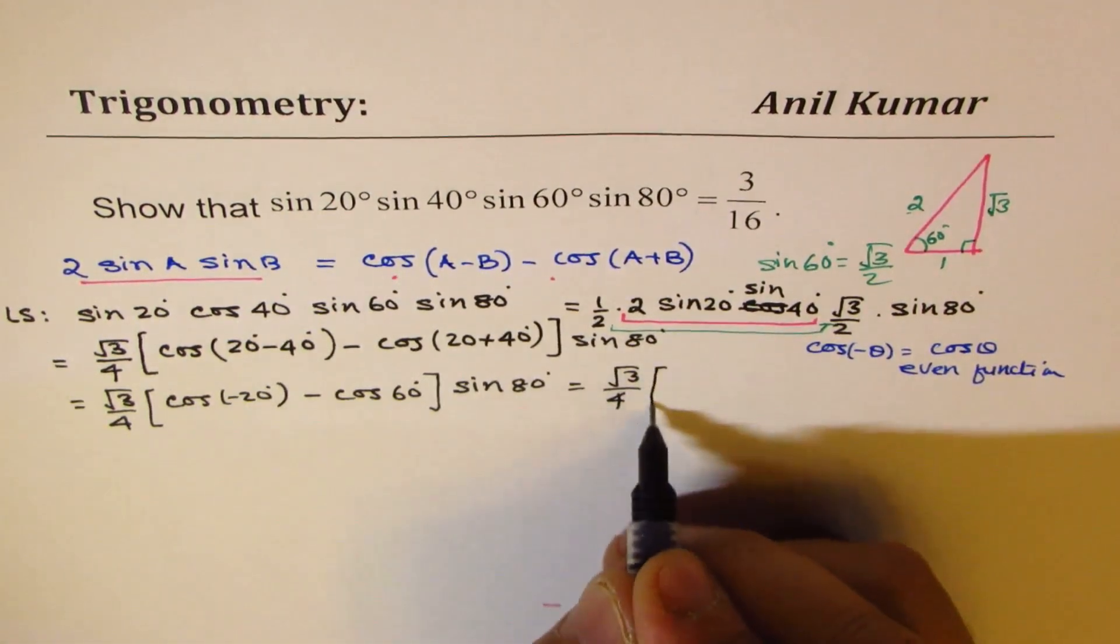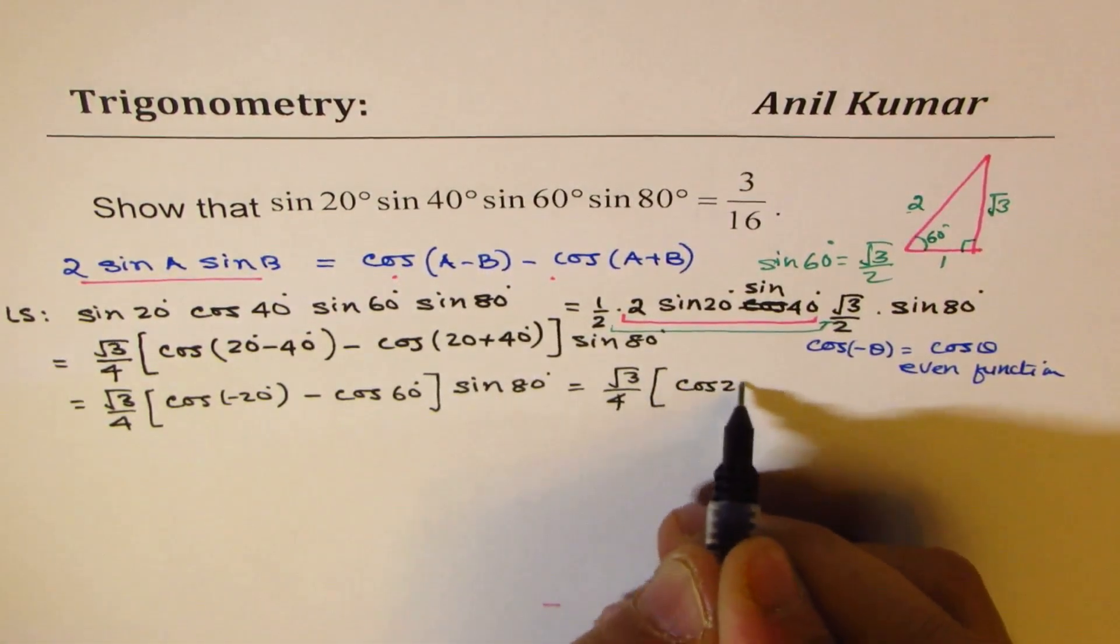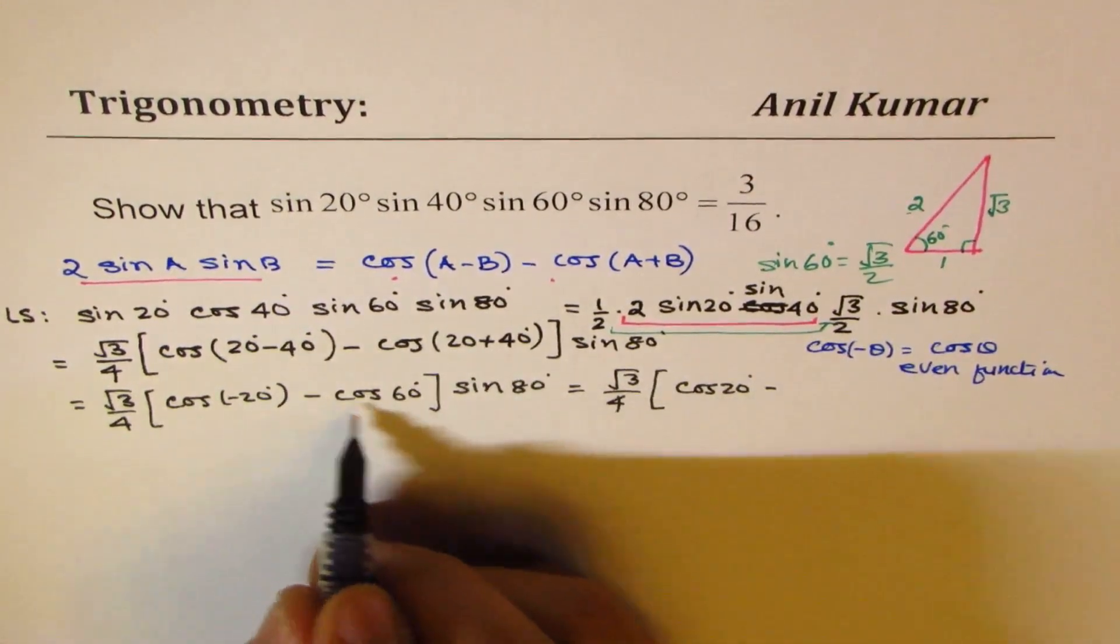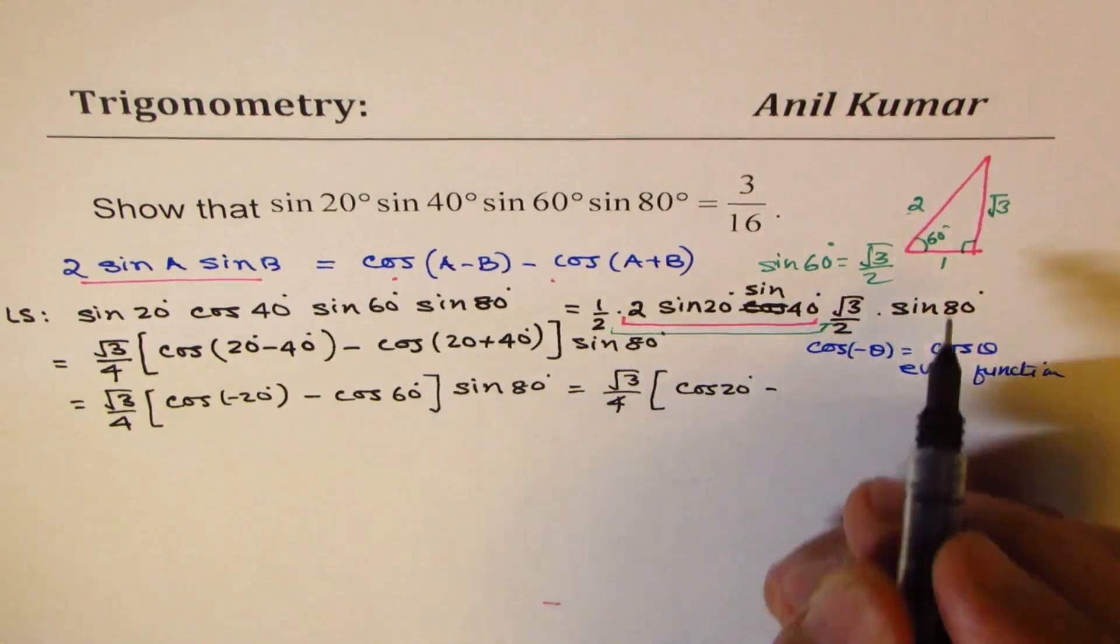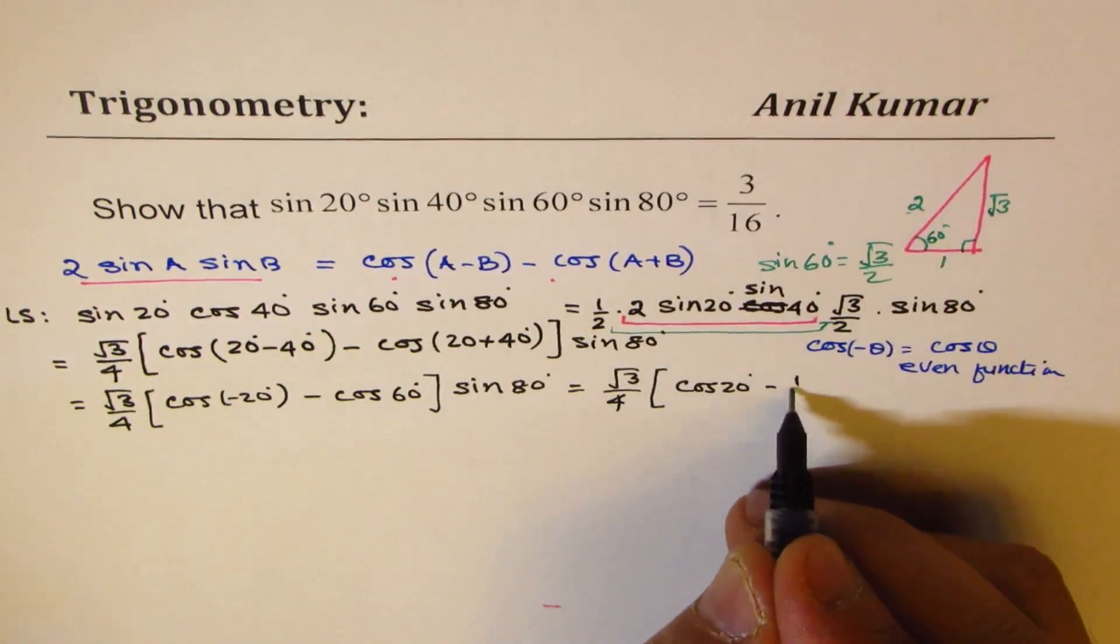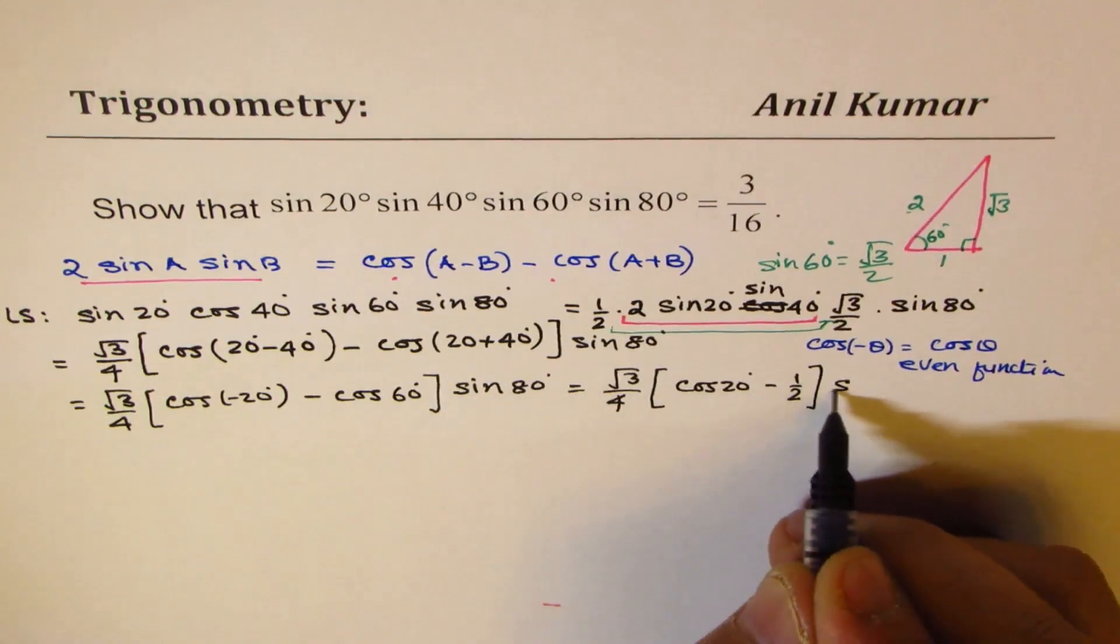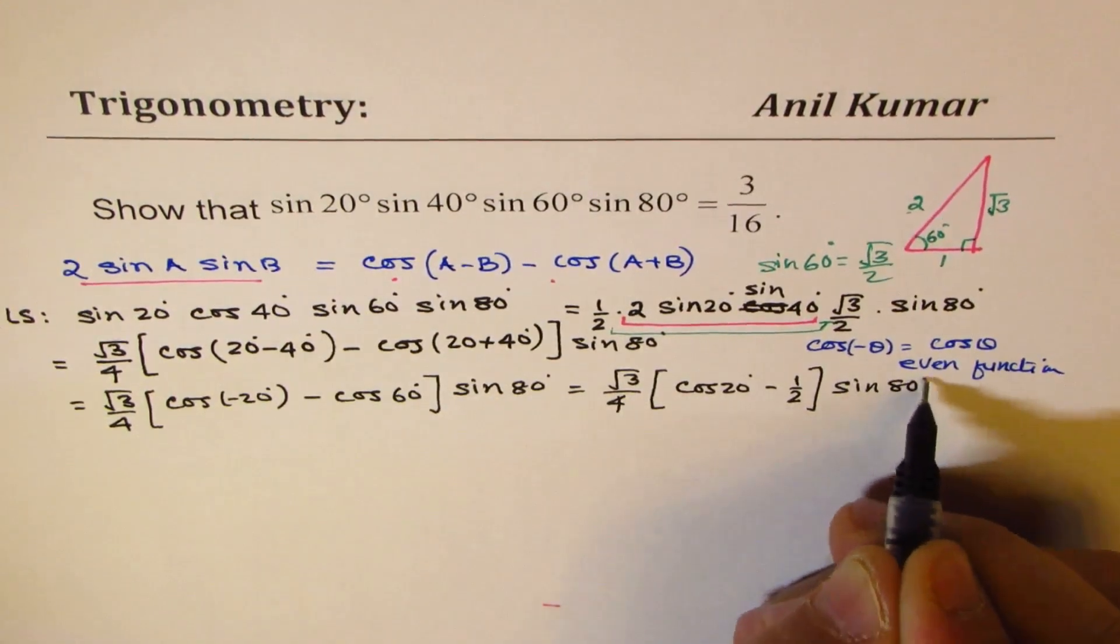So that gives us √3 over 4, cos(-20), I could write this as cos 20°, as explained here, minus cos 60°. So cos 60 is 1/2, so let me write this as 1/2, and we'll write sin 80°.